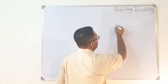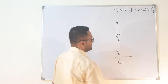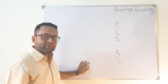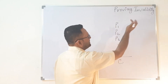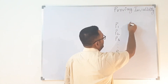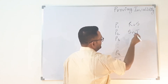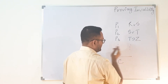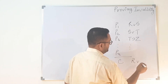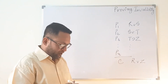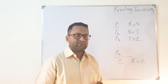The same thing we will be doing in proving invalidity. We will have P1, P2, P3 up to Pn as premises, and C as the conclusion. We need to find a substitution instance — for example, P1 might be R ∨ S, P2 might be S ∨ T, P3 might be T → Z, and the conclusion R ∨ Z. We need to find a substitution instance which can make the premises true and the conclusion false.